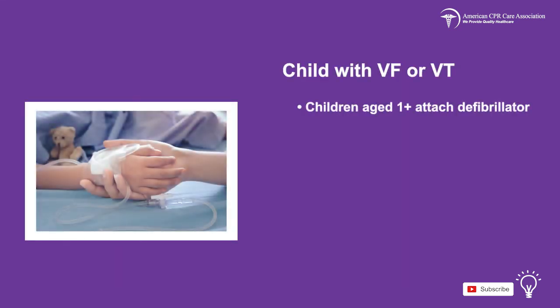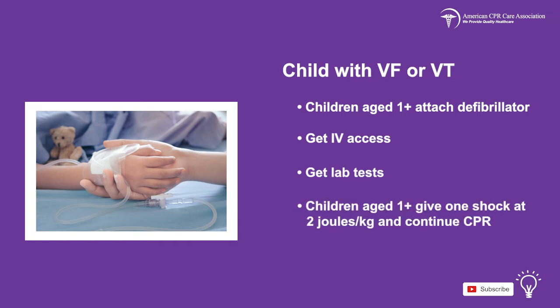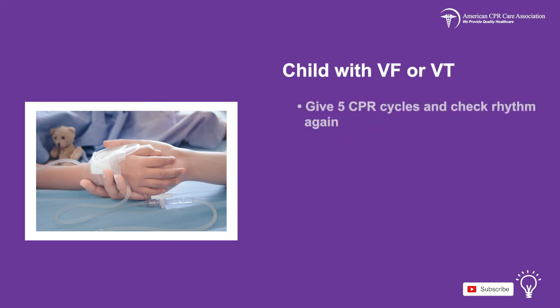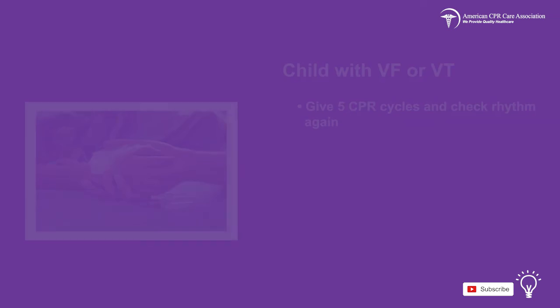For children over a year old, attach a defibrillator, then obtain vascular access to administer medication. Get lab tests to further evaluate the situation. Give one shock at 2 joules per kilogram for children over the age of 1 and continue CPR, giving 5 cycles of CPR, and then check the rhythm again.